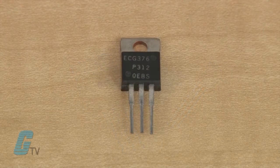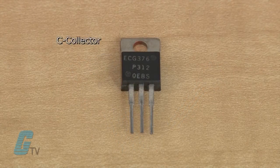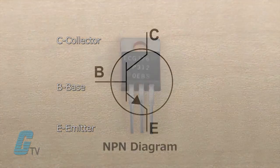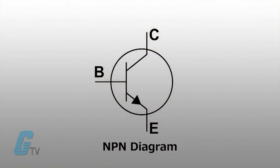These terminals are known as the collector, the base, and the emitter. The base is the controller device where a signal is supplied to. The collector is the input from a larger power source and the emitter is the output power for the power source.